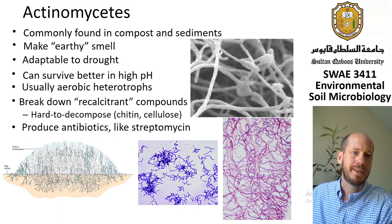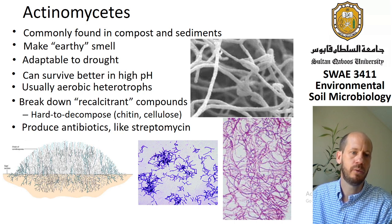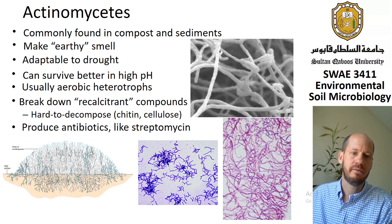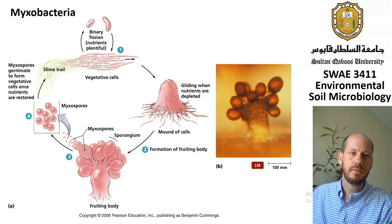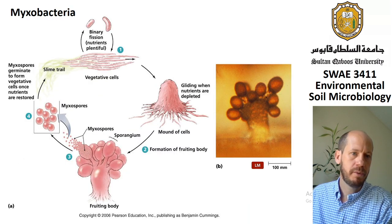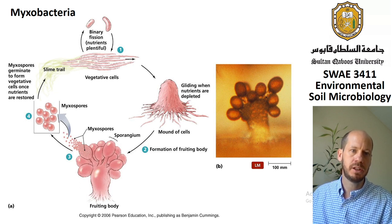Actinomycetes are adaptable to drought, can survive at higher pH than most bacteria, and are very important heterotrophs responsible for organic matter cycling and production of antibiotics — for example, streptomycin. Another group famous for producing antibiotics in soil are the myxobacteria.